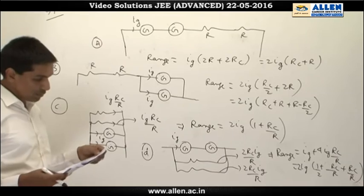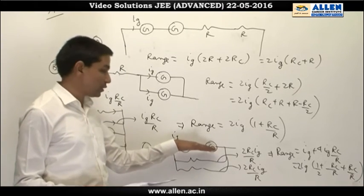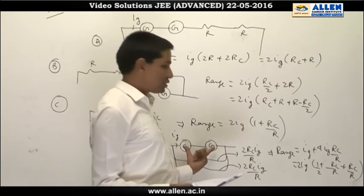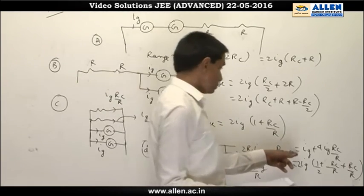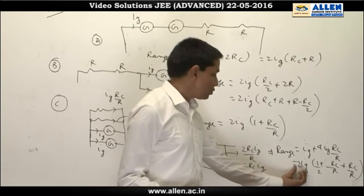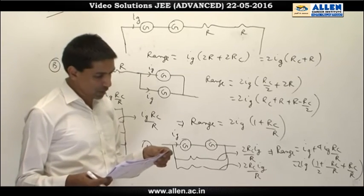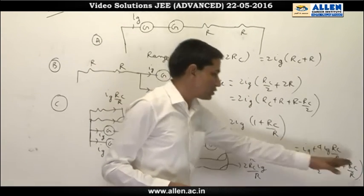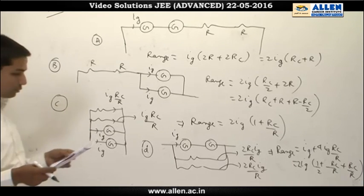In option D, maximum current range is said to be obtained when two galvanometers are connected in series and the combination is connected in parallel with both resistors. The galvanometers carry I_G each, with a total potential drop of 2I_G·R_C. The current in each resistor branch is 2I_G·R_C/R. The total current is I_G + 4I_G·R_C/R, which rearranges to 2I_G(½ + R_C/R + R_C/R) — but wait, simplified it is 2I_G(½ + R_C/R). Since the question states R_C/R < ½, the term (½ + R_C/R) is less than 1, making option D less than option C. Therefore option C gives the maximum current range, and the answer is options B and C.